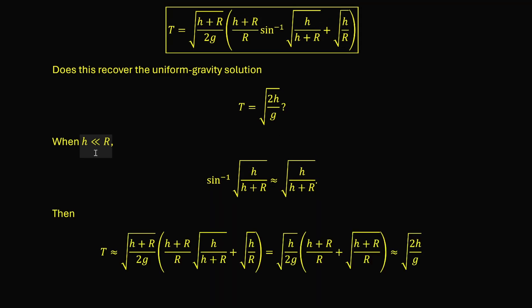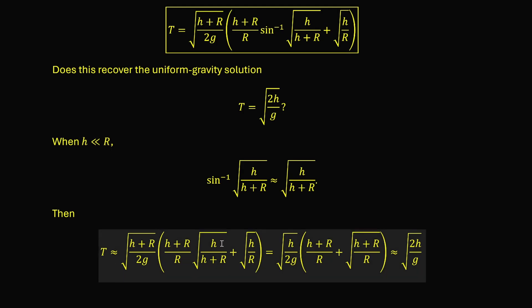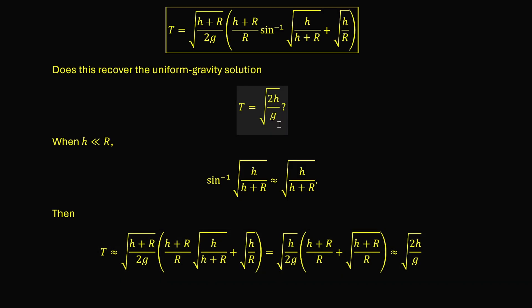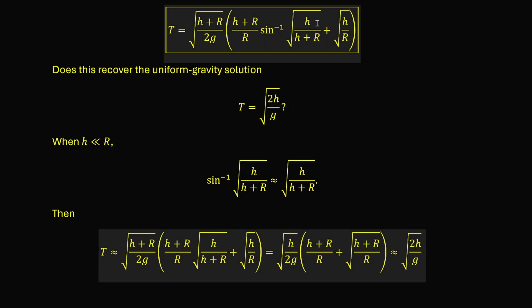When h is small compared to r, we bring out the common factor √h to the front and get √(h/2g) times √((h+r)/r) + √((h+r)/r). When h is small, (h+r)/r is approximately 1, so the two terms in the bracket are both approximately 1. Together with the factor at the front, this simplifies to √(2h/g), which is exactly the uniform gravity solution.